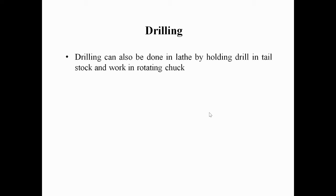We perform drilling on a lathe by holding the drill in the tailstock. There will be a headstock and a tailstock in the lathe. We hold the drill via the tailstock. The workpiece will be rotating. On the left side of the lathe there will be a headstock, and on the right side a tailstock. We fix the drill in the tailstock and make a hole against the rotating workpiece, which is held in the lathe chuck.